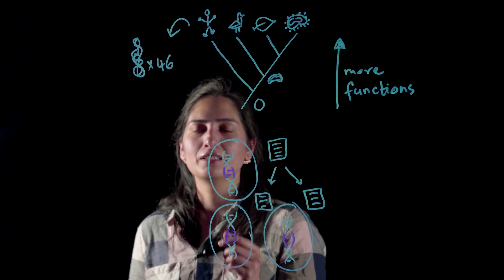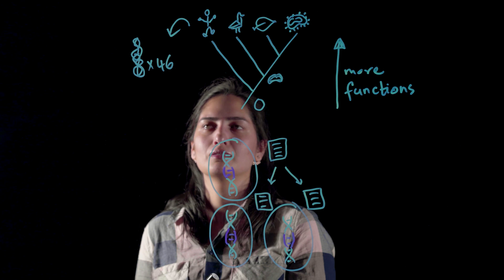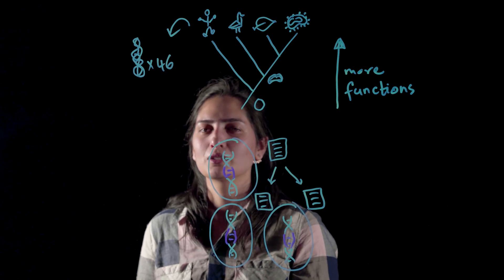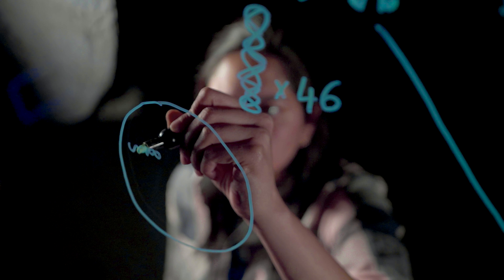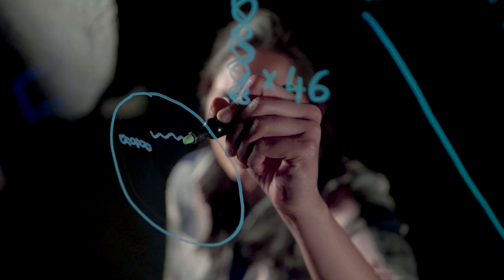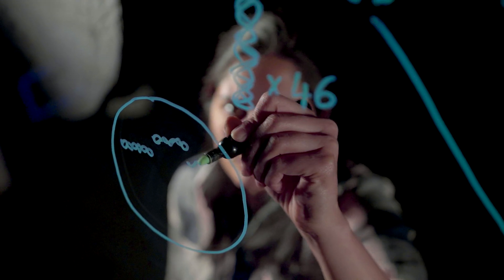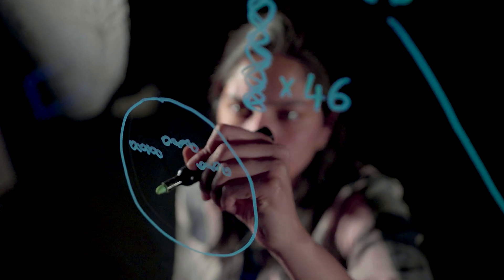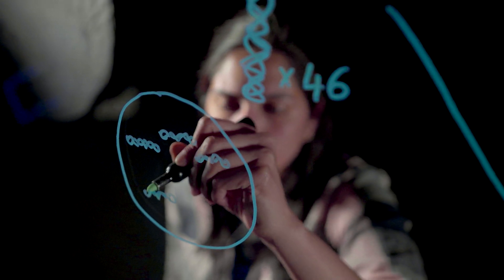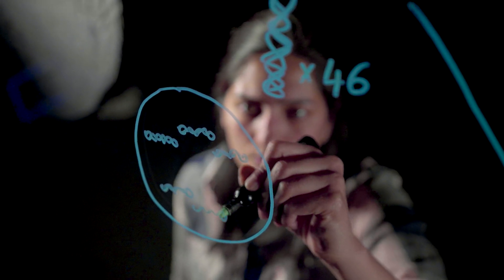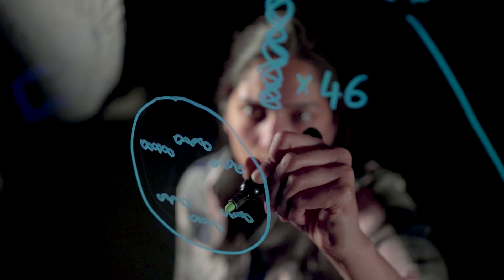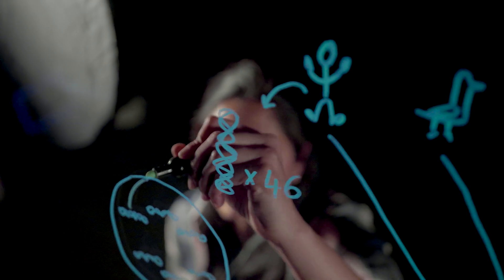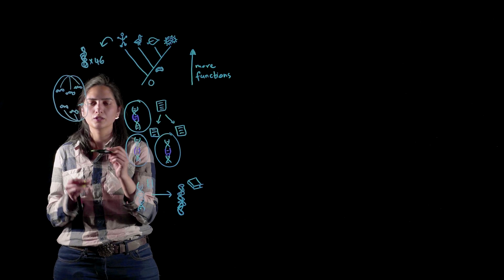Imagine making copies of these 46 books and segregating them into individual sections — this sounds like a complex task. Luckily, our cells have managed to design a system that allows for the segregation, in which these individual chromosomes are segregated to different ends of the cell, allowing them to be sectioned into the daughter cells.